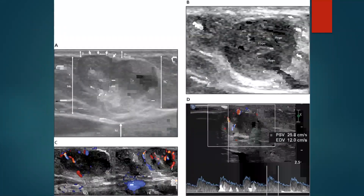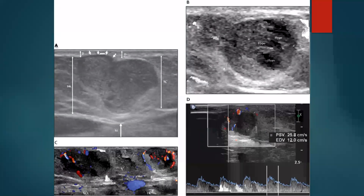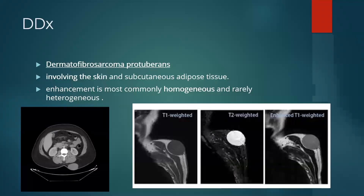This is the appearance of a similar case on ultrasound, showing the dermis origin with a fairly lobulated, well-defined, hypoechoic appearance with internal vascularity. Differential diagnosis includes dermatofibrosarcoma, which usually involves the skin and subcutaneous adipose tissue and shows homogeneous enhancement. The distinctive feature of spiradenoma is the lack of continuity with the epidermis, as well as heterogeneous minimal septal enhancement.